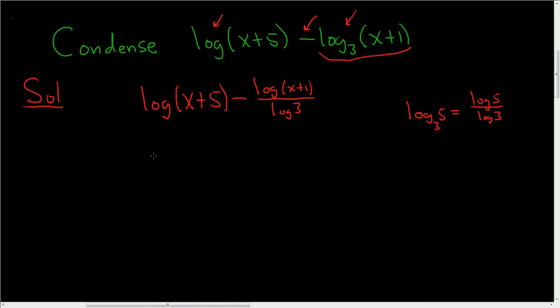So everything looks okay. Let's rewrite this as log of x plus 5 minus 1 over log 3 times the log of x plus 1.